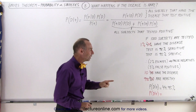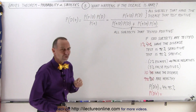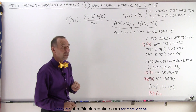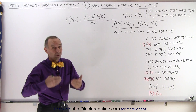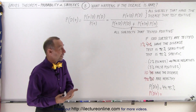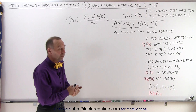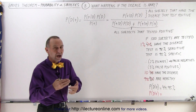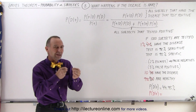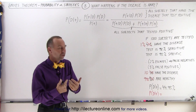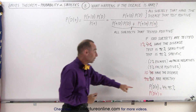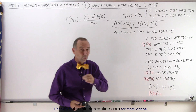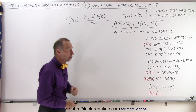But what happens to that number if we now drop to just 10 out of a thousand — only 1%? And then we can extrapolate what happens if it's 1 out of 10,000 or 1 out of 100,000. How does that very same test affect the results and the probability that the person testing positive actually has the disease?